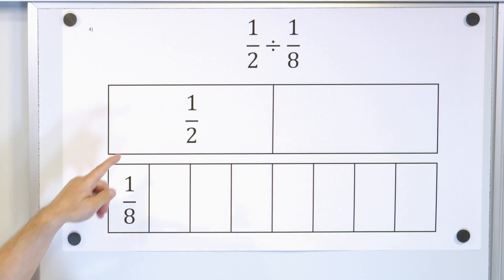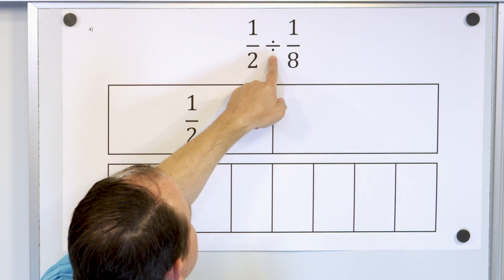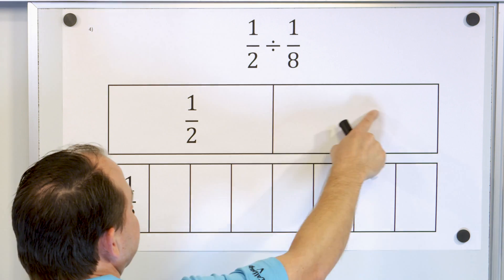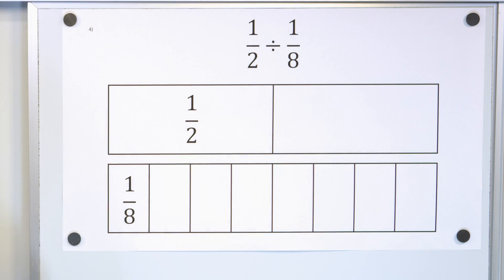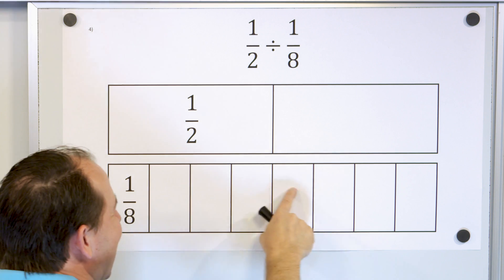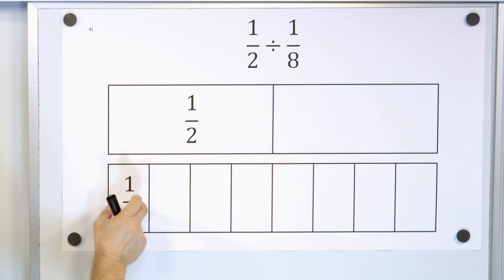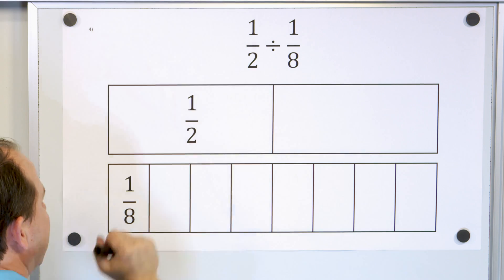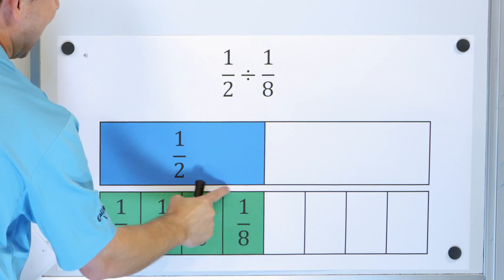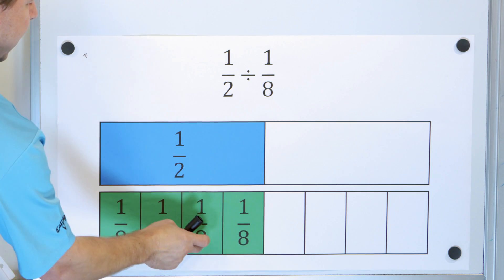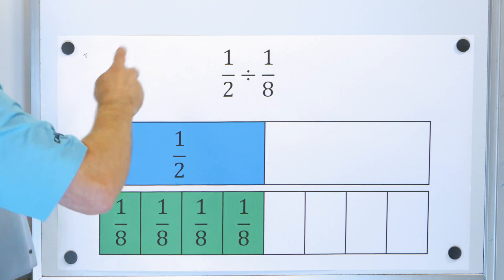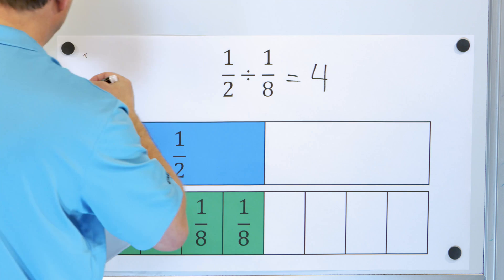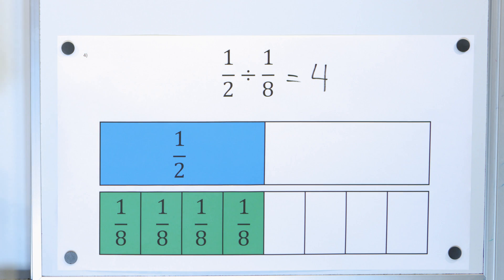For our next problem: 1 half divided by 1 eighth. 1 half is represented by half of the candy bar, and 1 eighth is cutting it into eight equal pieces and only having one. How many times can 1 eighth fit into 1 half? It fits 1 time, 2 times, 3 times, 4 times exactly. So when we divide these, we get an answer of 4. That is the final answer.